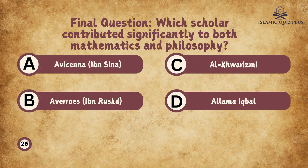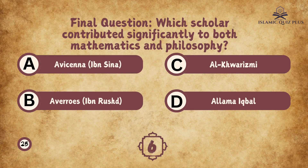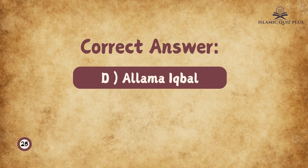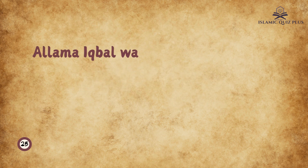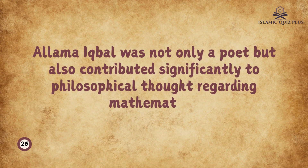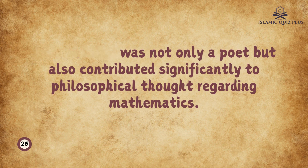Final question: Which scholar contributed significantly to both mathematics and philosophy? A. Avicenna, B. Averroes, C. Al-Khwarizmi, D. Allama Iqbal. The correct answer is D. Allama Iqbal. Allama Iqbal was not only a poet but also contributed significantly to philosophical thought regarding mathematics.